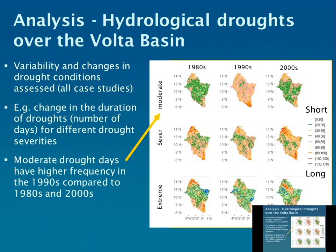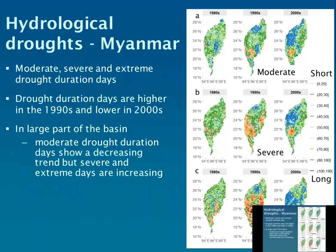In the graph you can see the different drought severities — moderate, severe, and extreme — and how duration has changed over time. For moderate droughts in the Volta, there is a higher frequency in the 1990s shown by pinky-red colours, with shorter durations compared to the bluey-green colours of other decades. For Myanmar, we see a decreasing trend in moderate drought days, but severe and extreme drought days are actually increasing through the 1980s, 1990s, and 2000s.